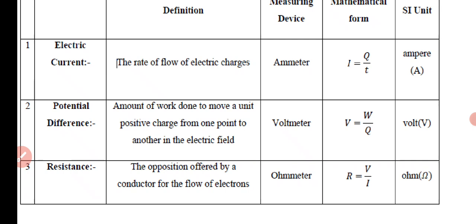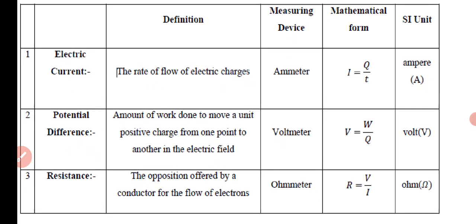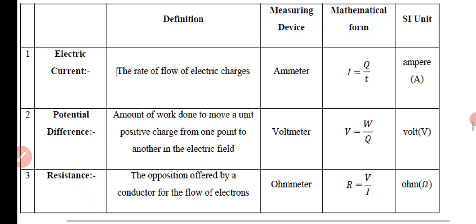Potential difference: the amount of work done to move a unit positive charge from one point to another point in the electric field is called potential difference. The device used to measure potential difference is voltmeter. Mathematical formula: V = W/Q (work done divided by charge). SI unit is volt.